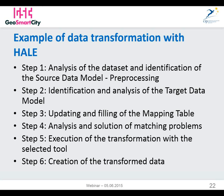Step two is the identification and analysis of the target data model — in our case, the GeoSmart City building data model. Then step three is updating and filling of the mapping table, which is a very crucial step to document the mapping process and identify correspondences between elements of the source and target data models. Step four is analyzing and resolving matching problems discovered while compiling the mapping table. Then step five is execution of the transformation with the selected transformation tool — in our case, Hale, an open source software tool. Finally, step six is creation of the transformed data.